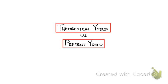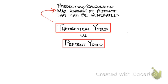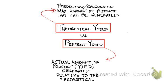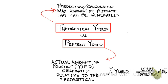The last concept to cover in this chapter is the difference between theoretical yield and percent yield. Theoretical yield is defined as the calculated maximum amount of product that can be made from a balanced chemical reaction equation. Percent yield, on the other hand, is the actual amount of product made from the chemical reaction relative to the theoretical amount. Here's the formula for percent yield: the actual amount of product obtained divided by the theoretical amount, times 100 percent. These two terms are important because they allow us to determine the efficiency of a chemical reaction. A high percent yield like 80 percent suggests a highly efficient reaction, whereas a low percent yield like 30 percent suggests an inefficient reaction.